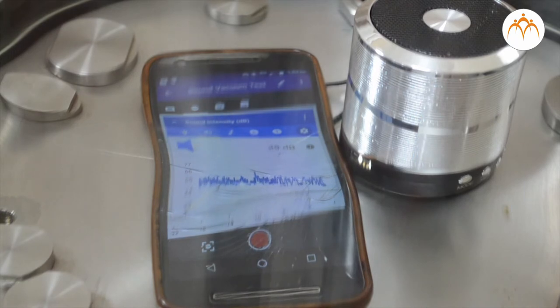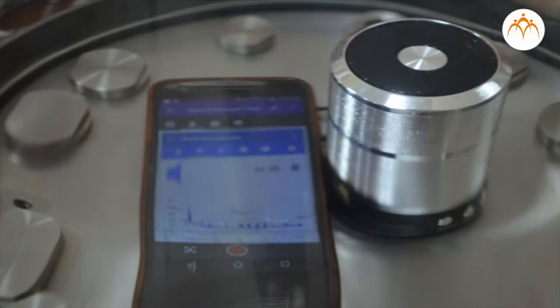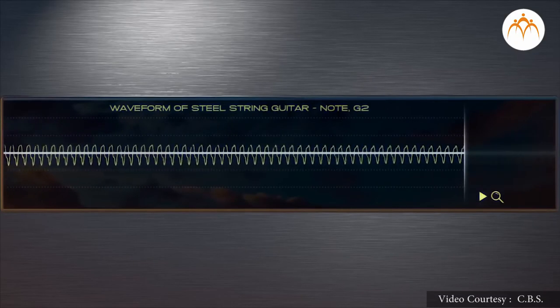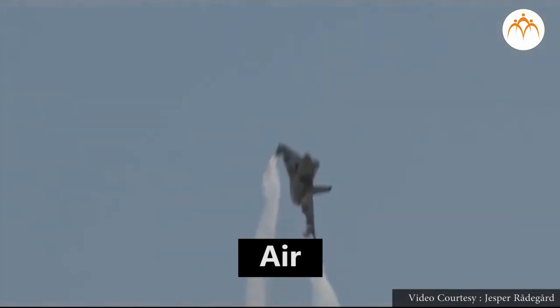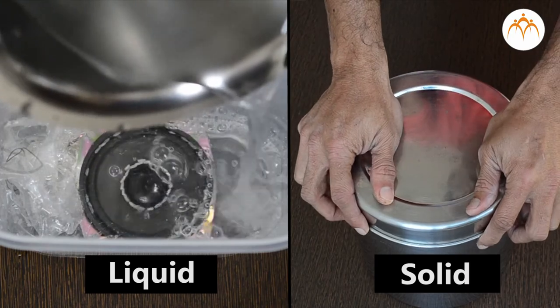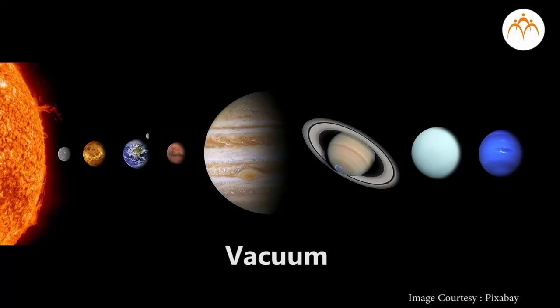With this activity we can say that sound needs a medium to travel. Summary: we discussed how sound travels through the air. It can travel through air, liquid, and solid medium. It cannot travel through a vacuum.